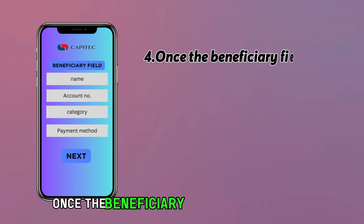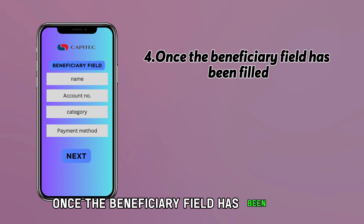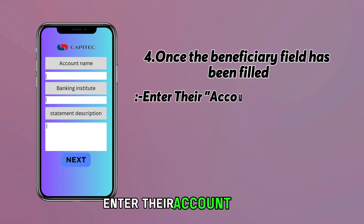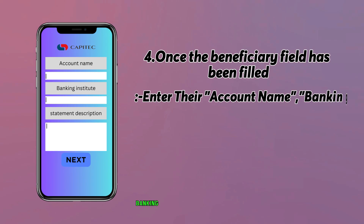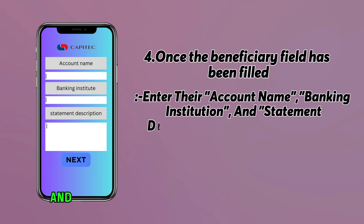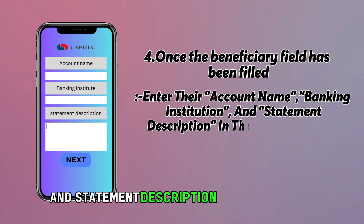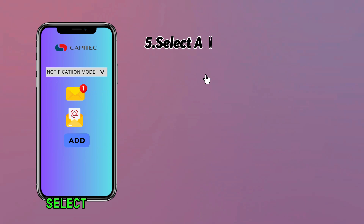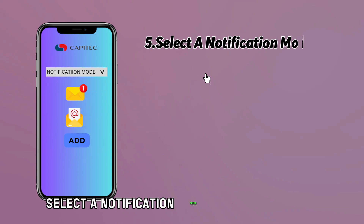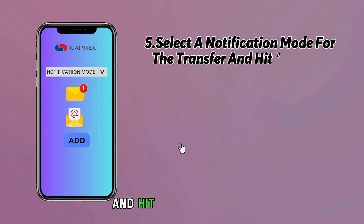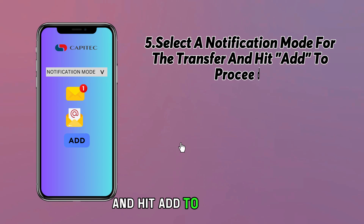Once the beneficiary field has been filled, enter their account name, banking institution, and statement description in the provided fields. Select a notification mode for the transfer and hit Add to proceed.